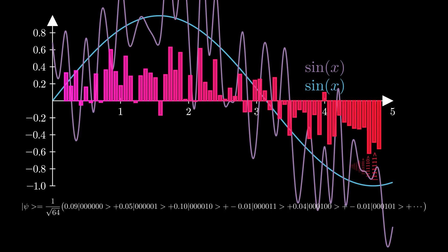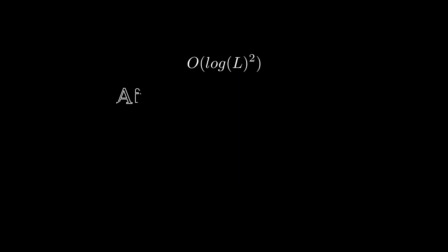Complexity-wise, this encoding phase scales like log l squared. However, after some clever parallelization, this can be reduced to log n squared.